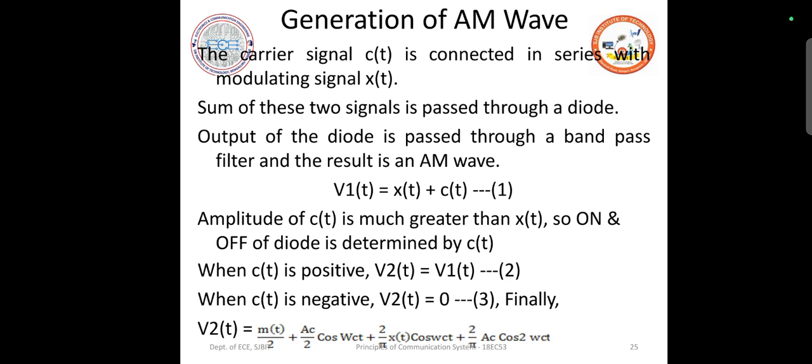If you pass it through a band pass filter, the output will contain only the carrier signal and the two sideband frequencies, which are fm plus fc and fc minus fm.